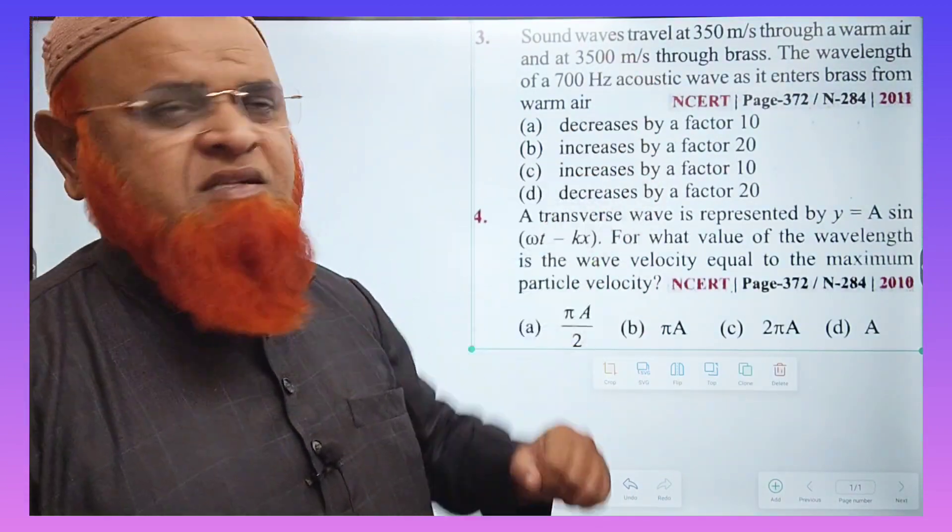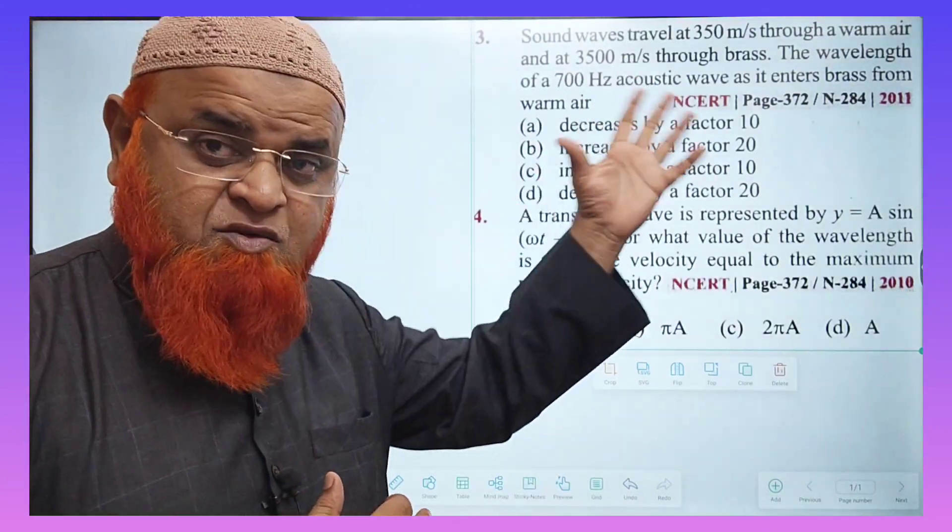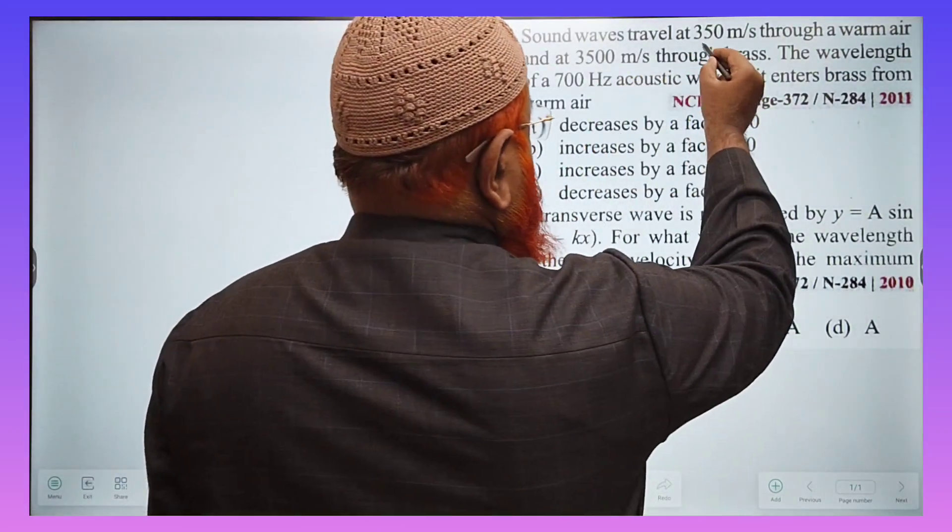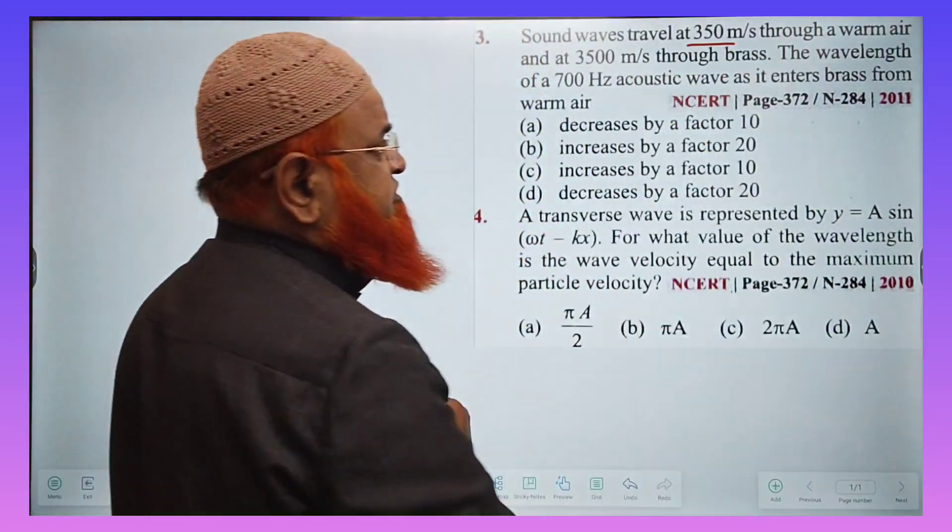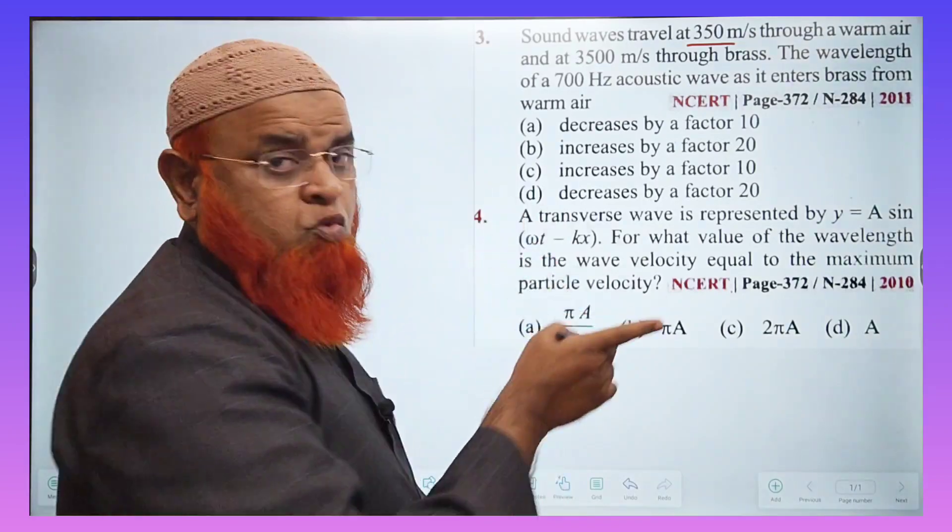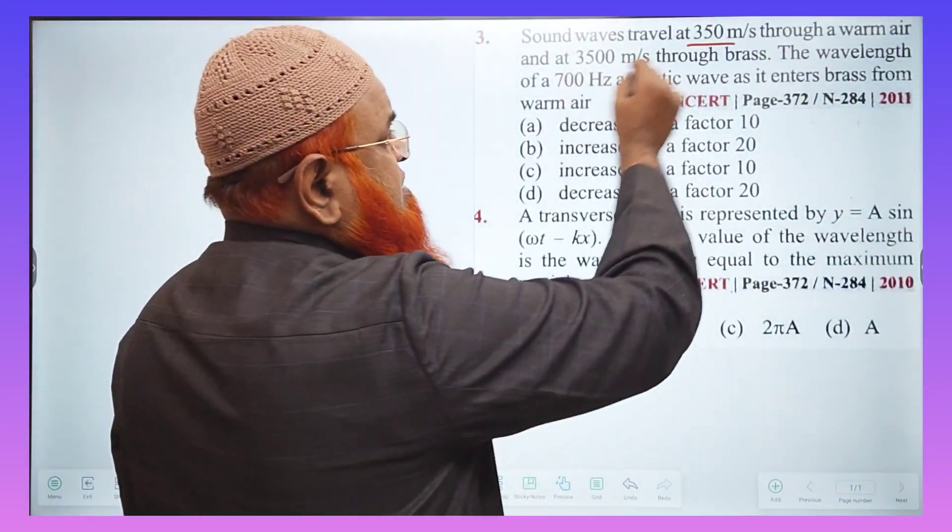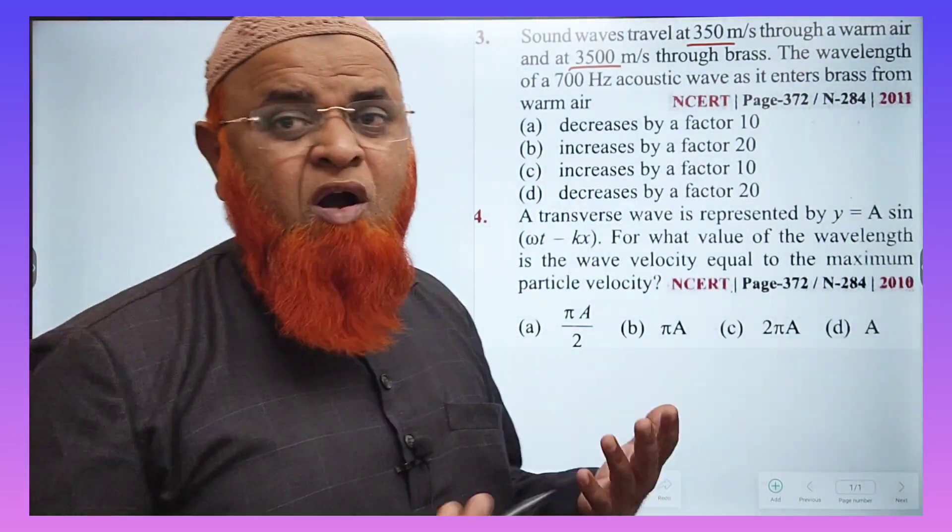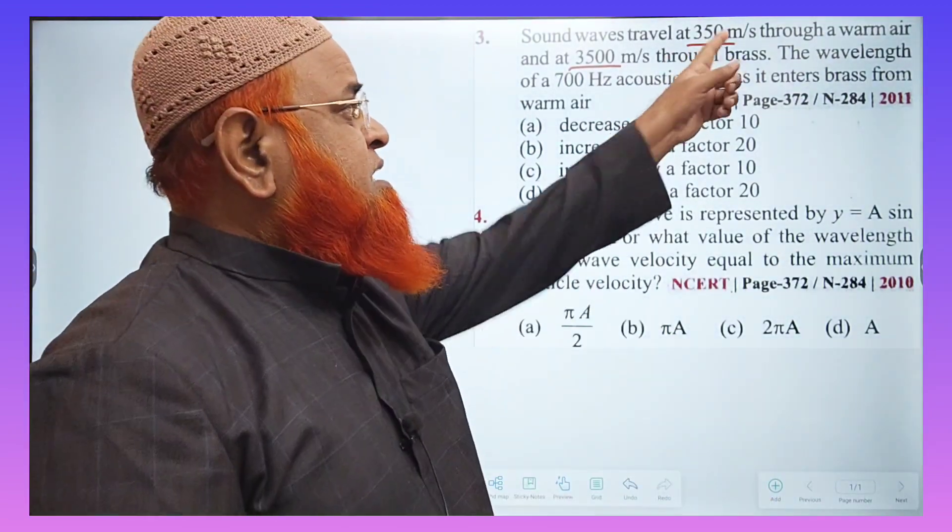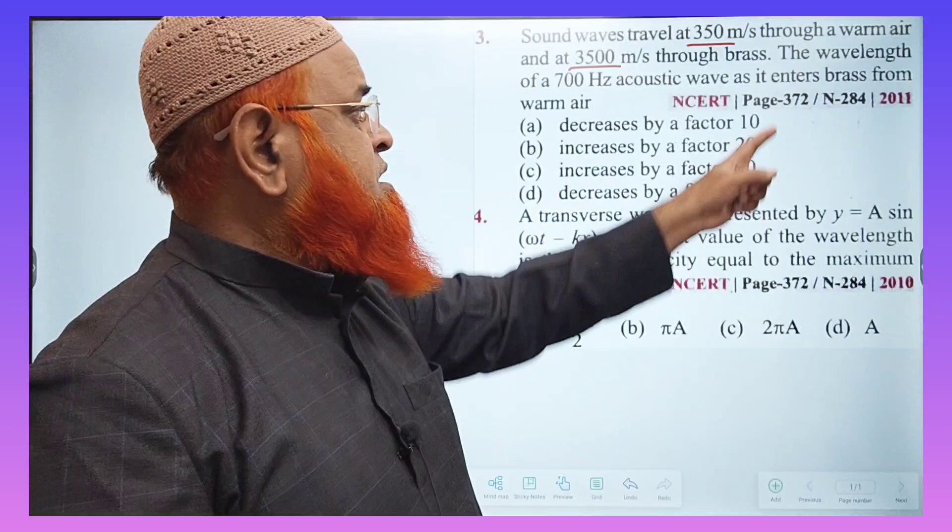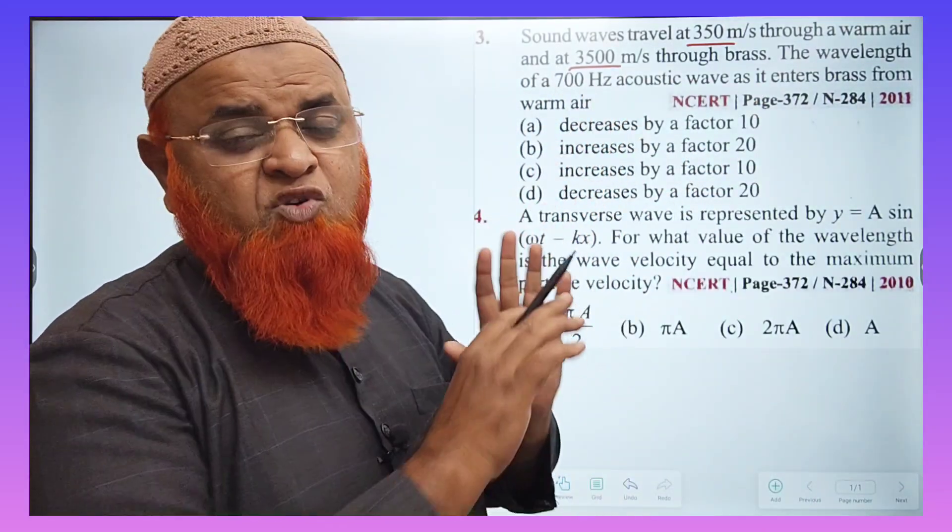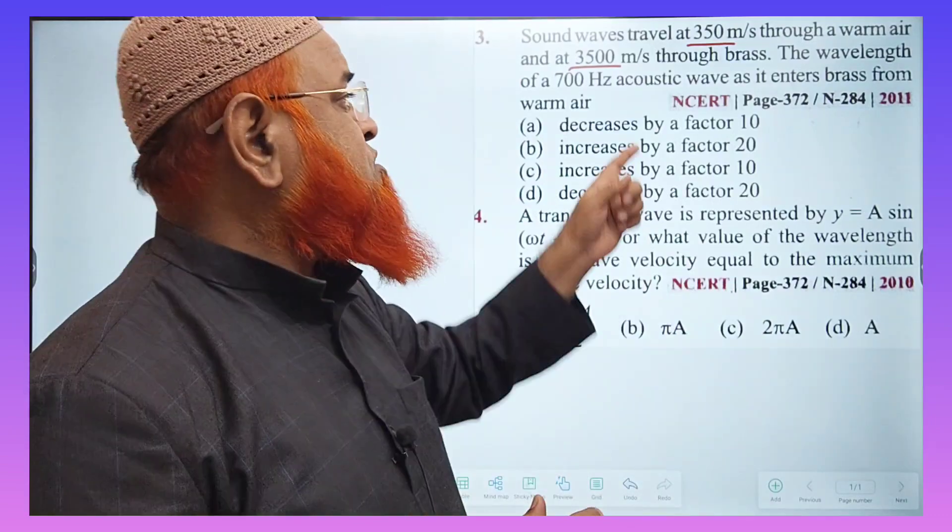You can just see that in the question, the given first question here. It is said that velocity is 350 meters per second through warm water, and 3500 meters per second in brass. Speeds are different. If you observe, wavelength is 700. It is not going to change.